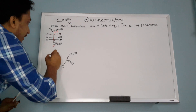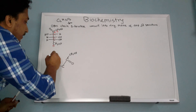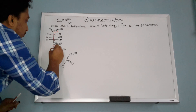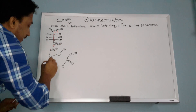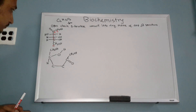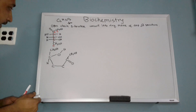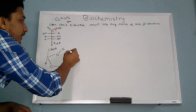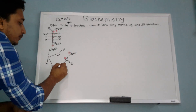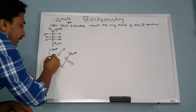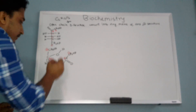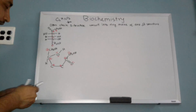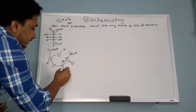Carbon number five has two substituents: one is OH and another one is CH2OH, plus one H. This is your open chain form. Carbon number one is here, this is two, this carbon is three, this carbon is four, this carbon is five, and this carbon is six.